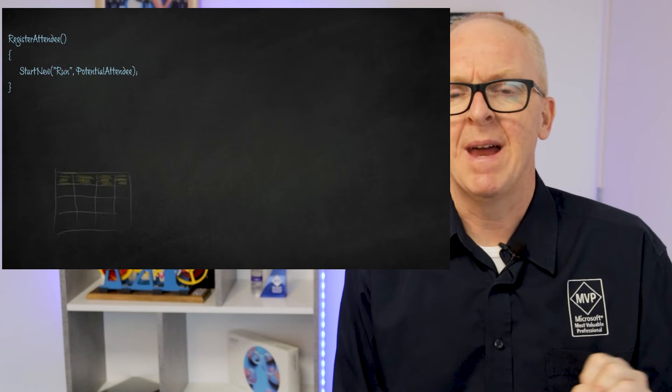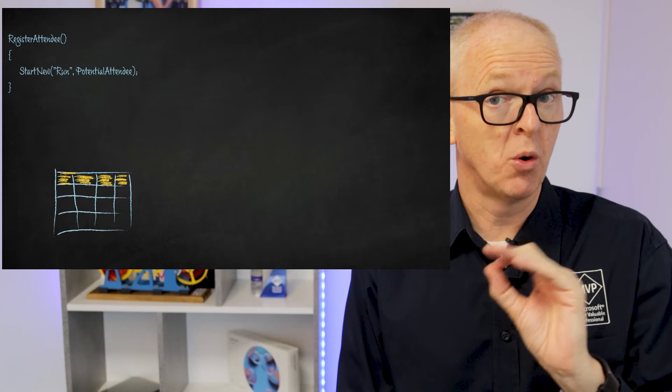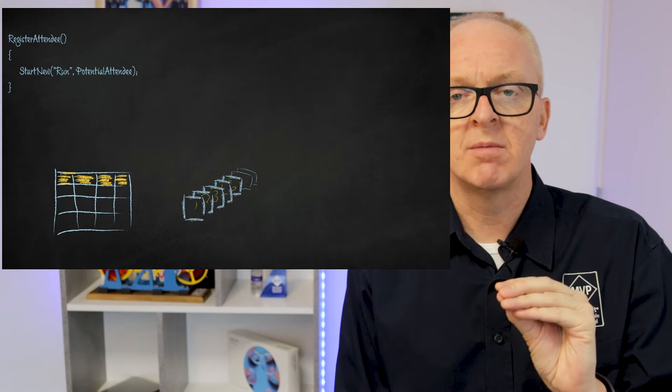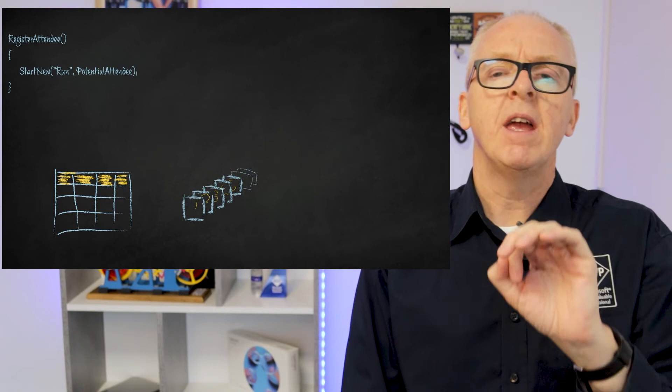We have this first function called RegisterAttendee. We call StartNew here and most people assume that calls the function with the orchestration trigger — that's not really what's happening. What happens is that this call takes the potential attendee data and stores it in a table in Table Storage. Then it places a new item on a special queue — let's call it the orchestration queue. In that item it stores the instance ID and info about where to get the data from Table Storage.